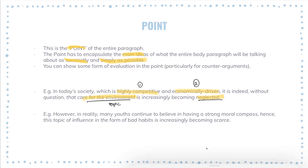Another example: 'However, in reality many youth continue to believe in having a strong moral compass; hence this topic of influence in the form of bad habits is increasingly becoming scarce.' Here, evaluation could come through stakeholders — if the question didn't specify youths, this could be a stakeholder I'm specifically looking at. So your point: make it as short as possible but let it capture your argument or counter-argument that you want in that body paragraph.